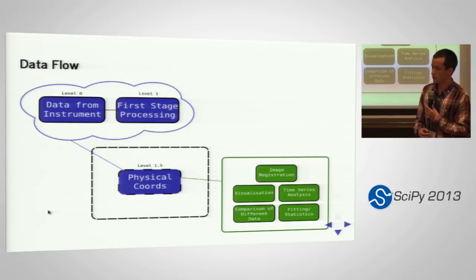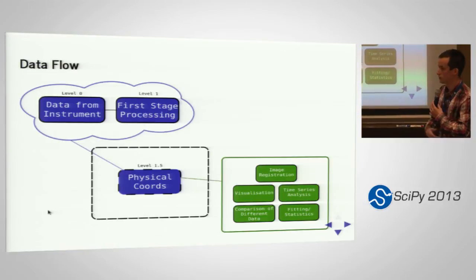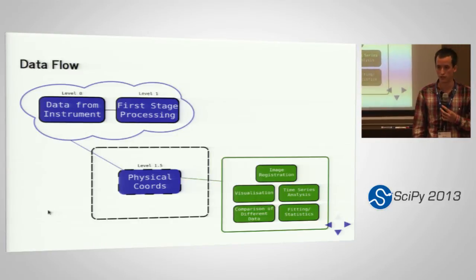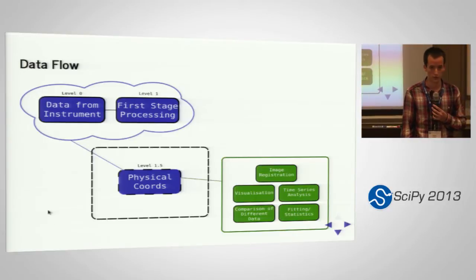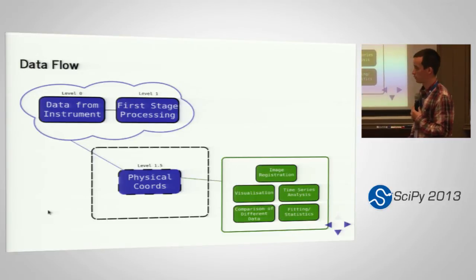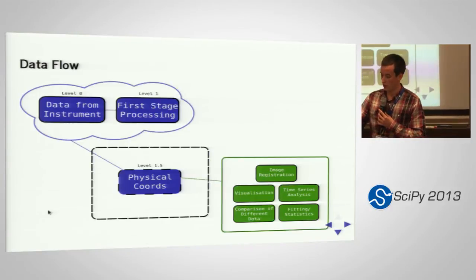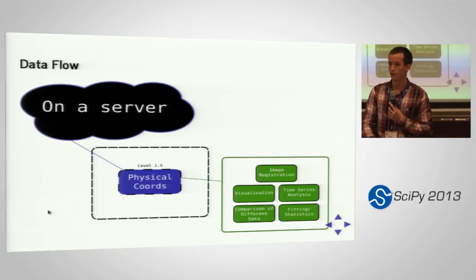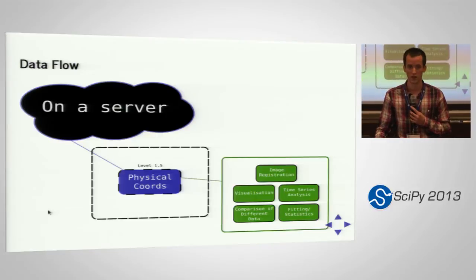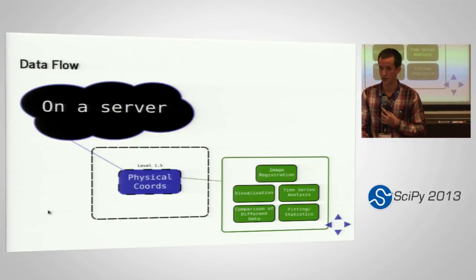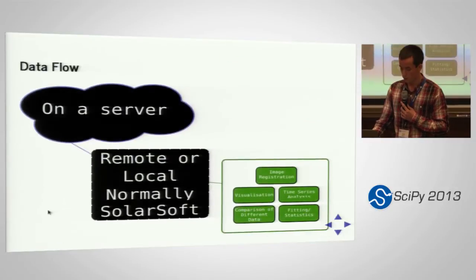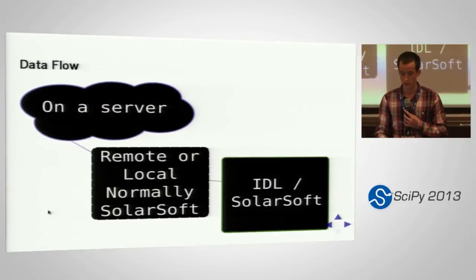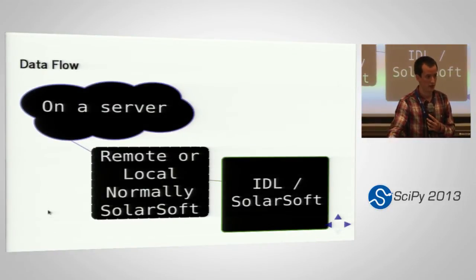At the moment, as the guy from SKA was talking about, some of the processing depending on what instrument it is is done on a server somewhere where the data comes down from the telescope, and some of it is left to the end user. Most solar physics data analysis is done in a package called SolarSoft, which is IDL. Most of the server-side and local processing is all SolarSoft, and most people therefore just use SolarSoft for their physical analysis as well.